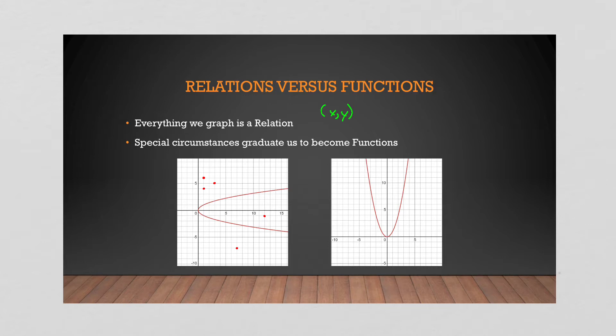So both of these are relations, they just happen to be in this case, a sideways parabola. If you don't know what a parabola is, it's a u-shaped graph. And then this one is just your basic parabola. So yeah, they're both graphs plotted on a grid, they can be made up of points or not. They are both relations.